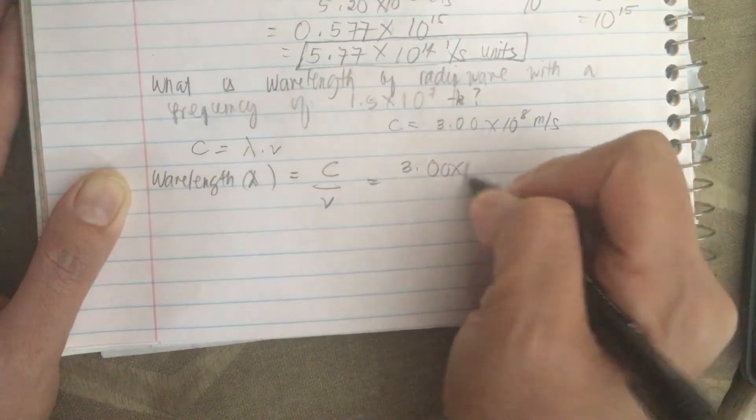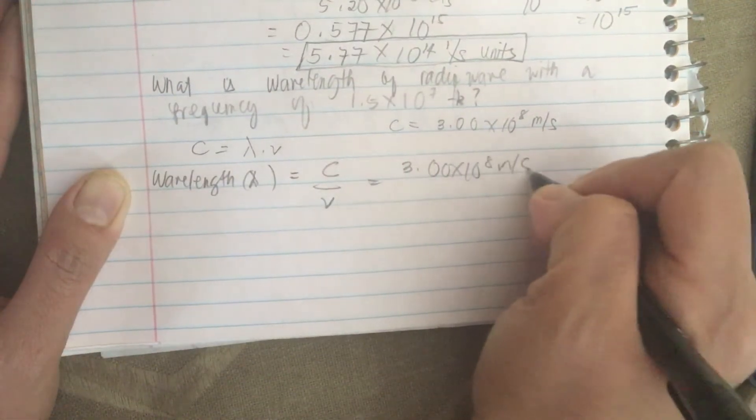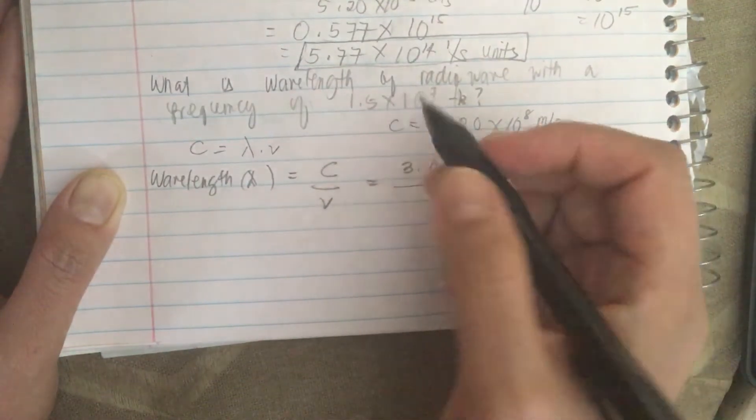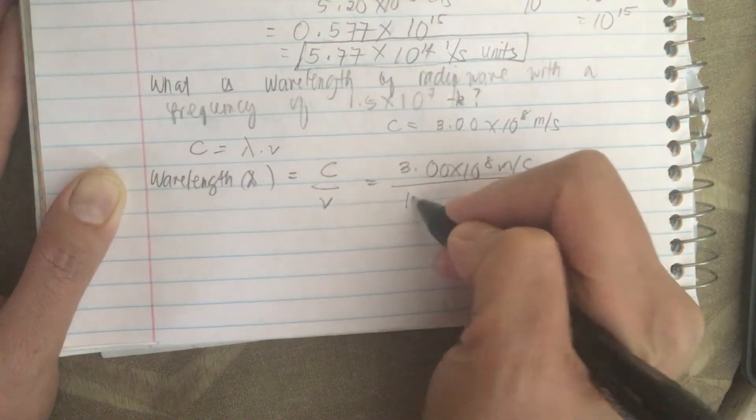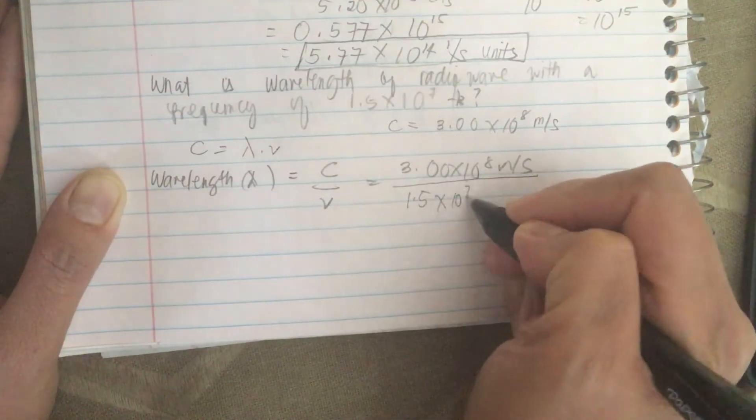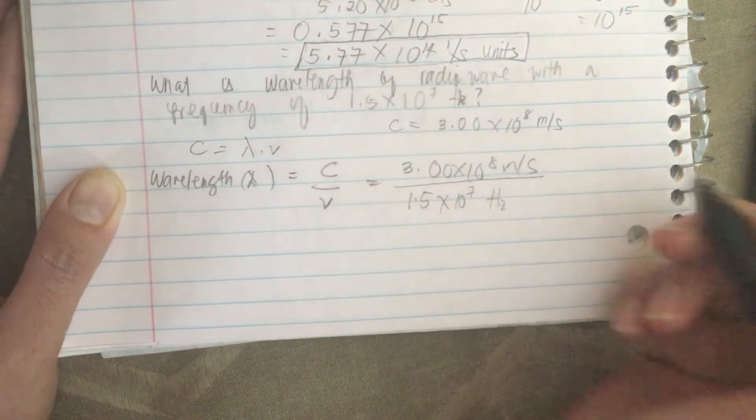So now let's plug in our numbers. So we have 3.00 times 10 to the 8 and on the bottom we have the frequency which is 1.5 times 10 to the 7 Hertz.